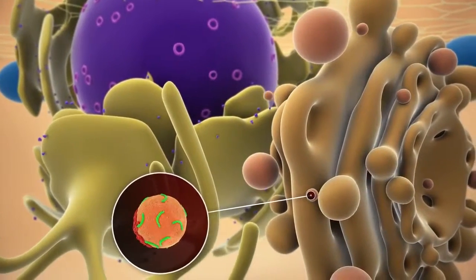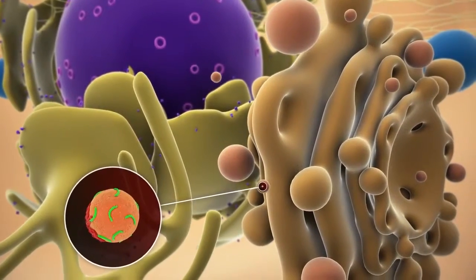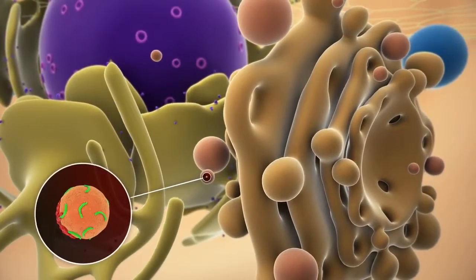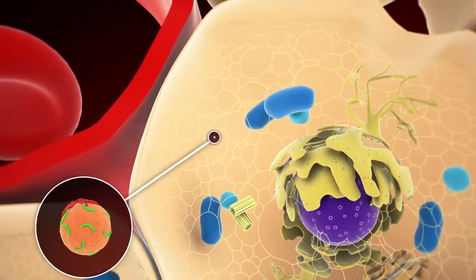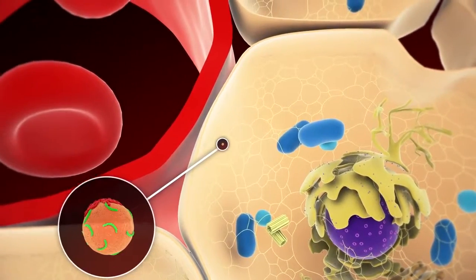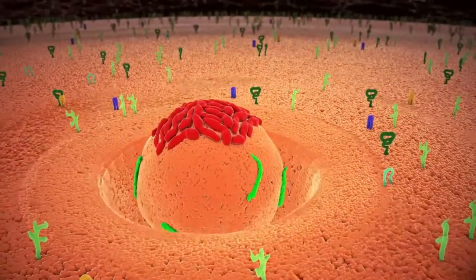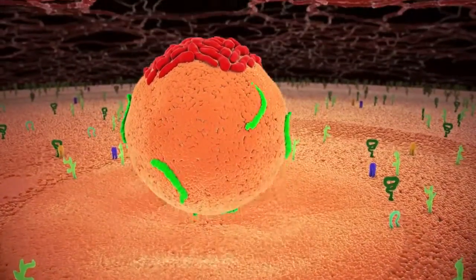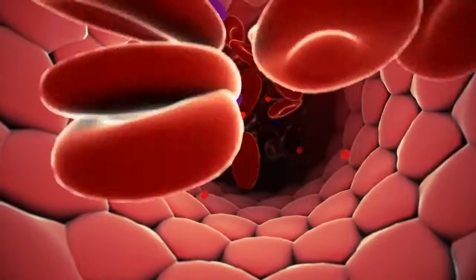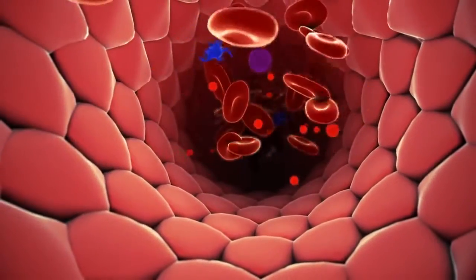Newly synthesized virus particles are thought to be transported to the cell surface in export vesicles via the cellular secretory pathway. Finally, they are released from the cell by exocytosis to reach the bloodstream.